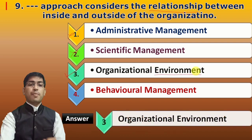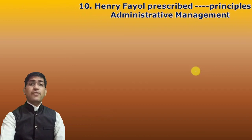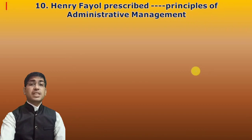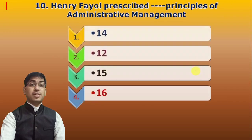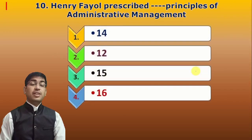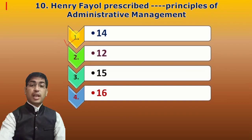Tenth question: Henry Fayol prescribed how many principles of administrative management? This is one of the most frequently asked questions and you must remember this. The answer is 14 principles.